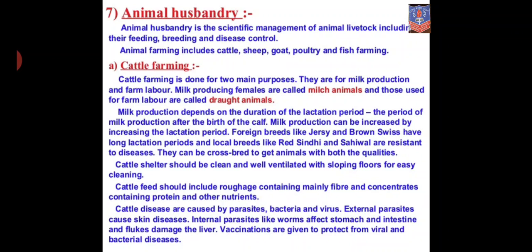Just as human beings get diseases, animals do too. Cattle diseases are caused by parasites, bacteria and virus. External parasites cause skin diseases. Internal parasites like worms affect the stomach and intestine, and fluids can damage the liver. To protect cattle from these diseases, vaccination is given to protect from viral and bacterial diseases.